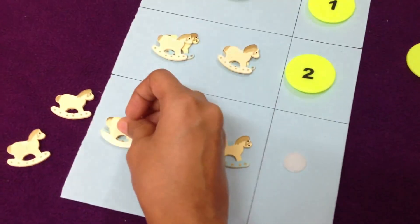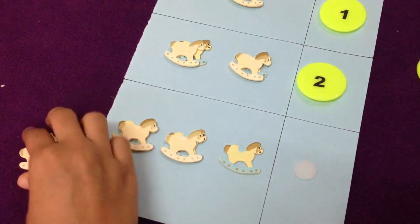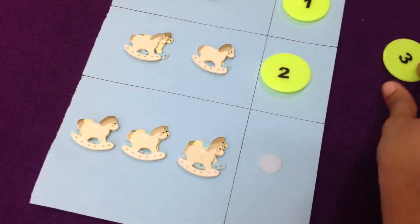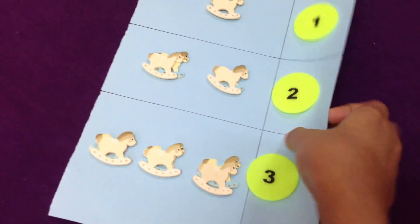What about this? Three. So they'll put three here. Three horses, so number three.